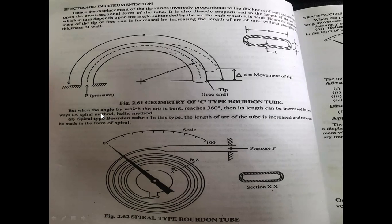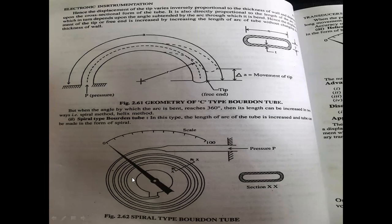When the arc length increases sufficiently, we measure it using the spiral type method. In the spiral type, it is 360 degrees — a full circle. Since the C-type has not completed 360 degrees, we call it the C-type Bourdon tube. To measure pressure, we attach a scale to read the displacement value.